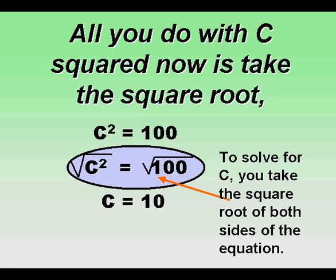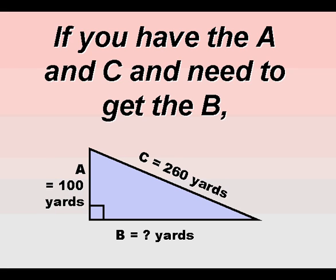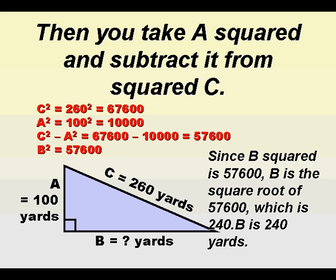All you do with C squared now is take the square root. Now you have the diagonal, you've made the problem moot. If you have the A and C and need to get the B, then you take A squared and subtract it from squared C.